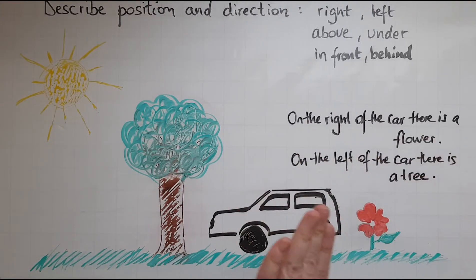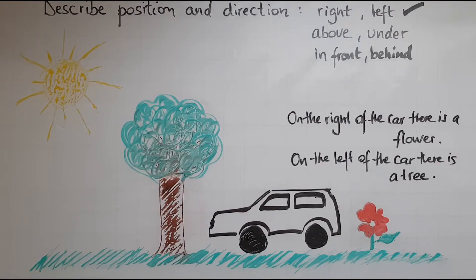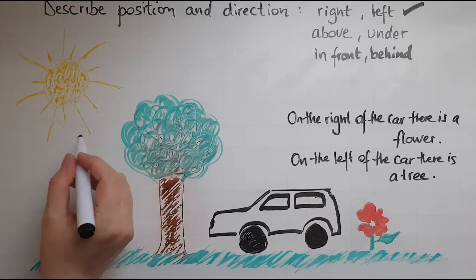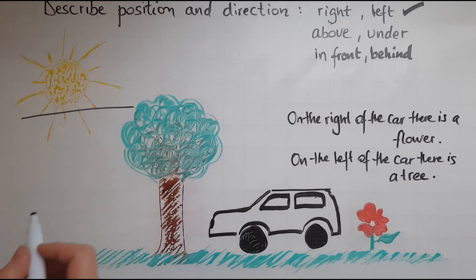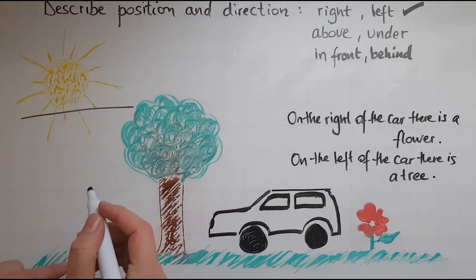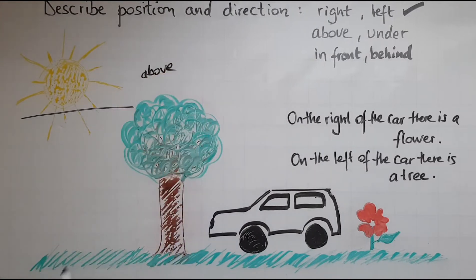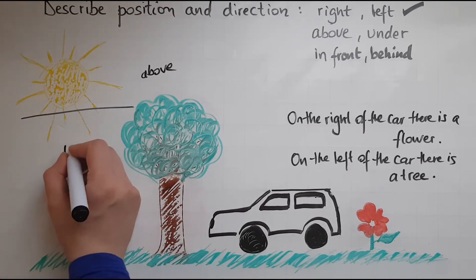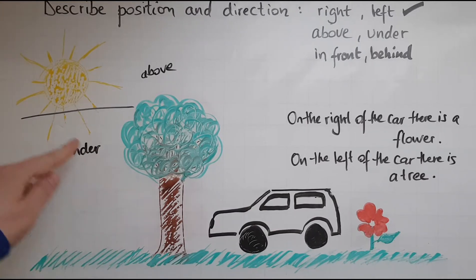So right on this side and left on the other side. Now, above and under: above the tree there is the Sun. If I draw a line here — here is a tree, above the tree on top there is the Sun. Underneath the Sun there is a tree, and under the Sun there is grass and a car.